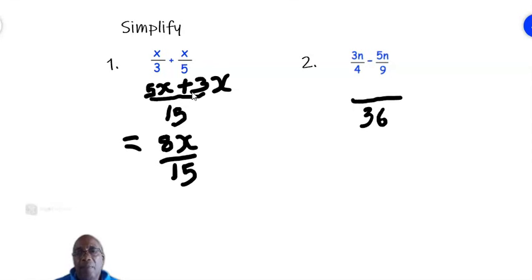First fraction. 4 into 36, that's 9. So 9 times 3n. 3 times 9 is 27. So you are going to have 27n minus. Second fraction. 9 into 36 is 4. 4 times 5n. 4 times 5 is 20. So that is 20n.